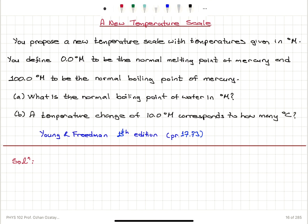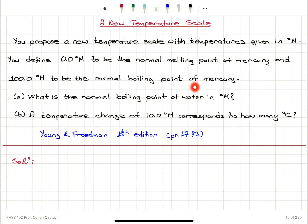A new temperature scale. You propose a new temperature scale with temperatures given in degrees M. You define 0.0 degrees M to be the normal melting point of mercury and 100.0 degrees M to be the normal boiling point of mercury. Part A: what is the normal boiling point of water in degrees M? Part B: a temperature change of 10.0 degrees M corresponds to how many degrees Celsius?